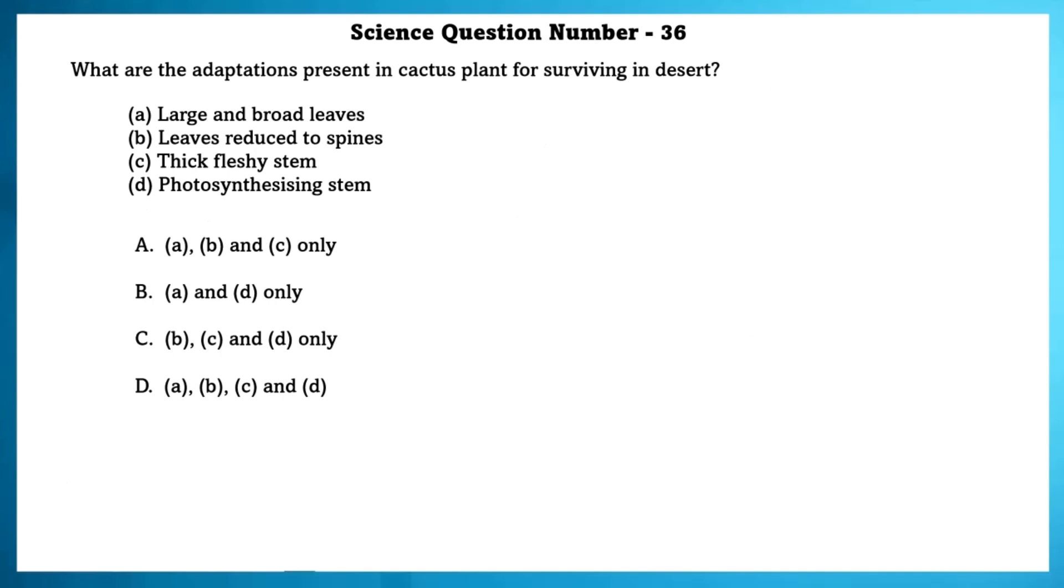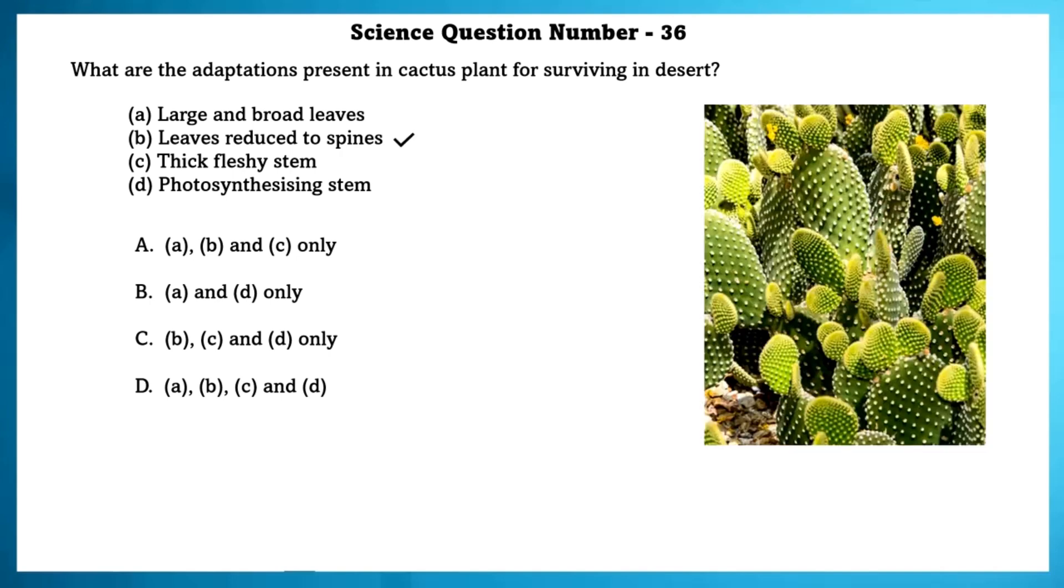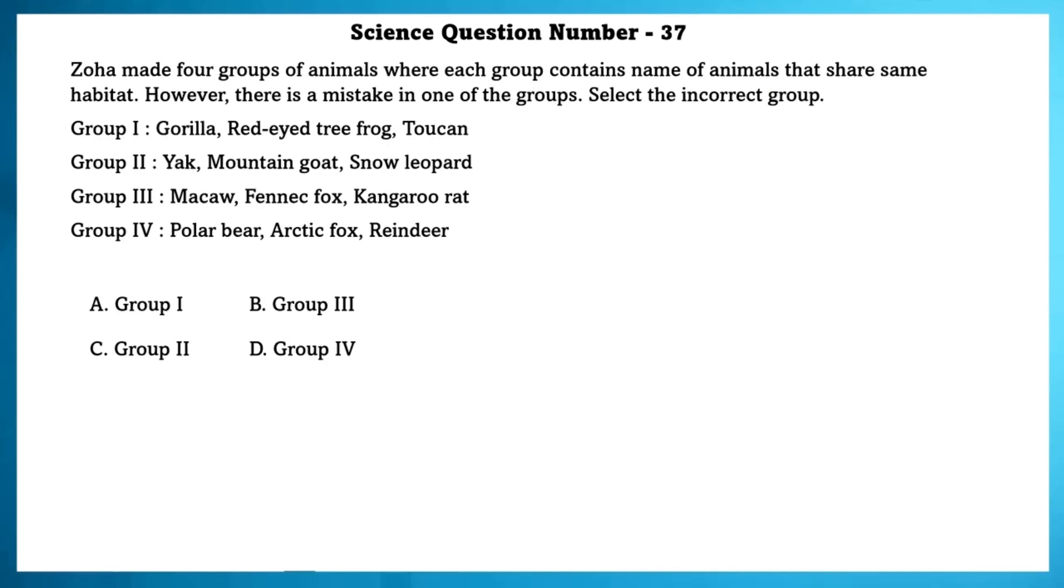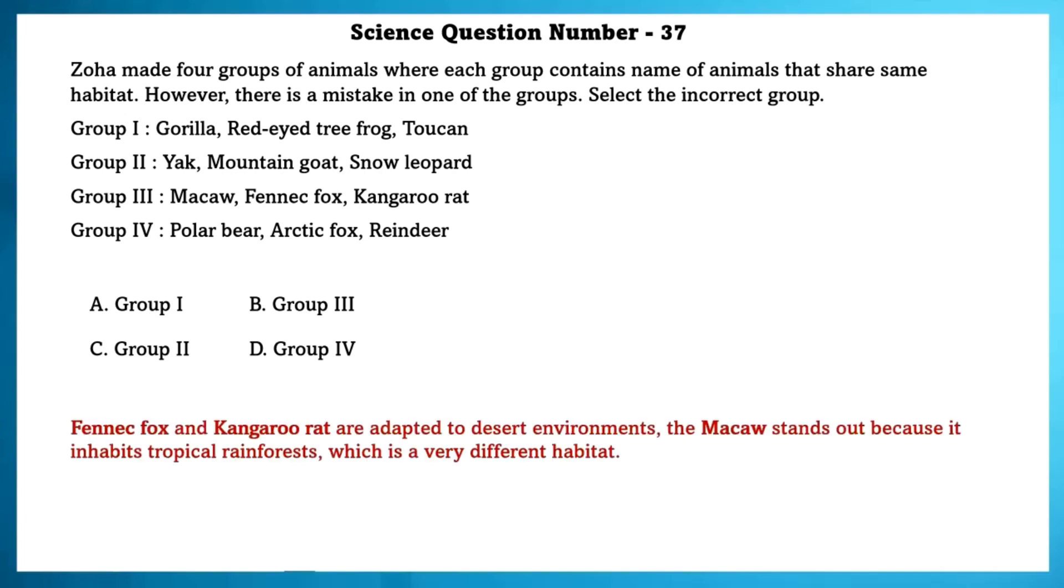Science question number 36. What are the adaptations present in cactus for living in a desert? The adaptation present in a cactus living in a desert is leaves reduced to spine, thick fleshy stem and photosynthesizing stem. Zohar made four groups of animals where each group contains name of animals that share same habitat. However, there is a mistake in one of the groups. Select the incorrect group. Fennec fox and kangaroo rat are adapted to desert environments. The macaw stands out because it inhabits tropical rainforests, which is a very different habitat.